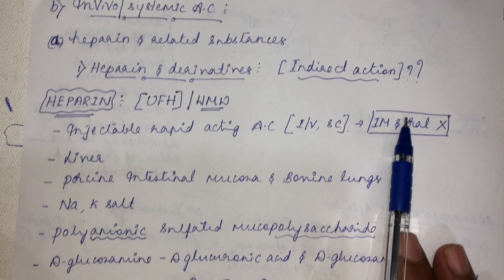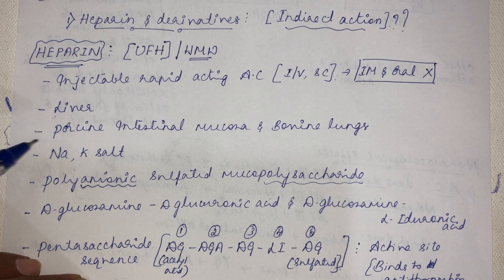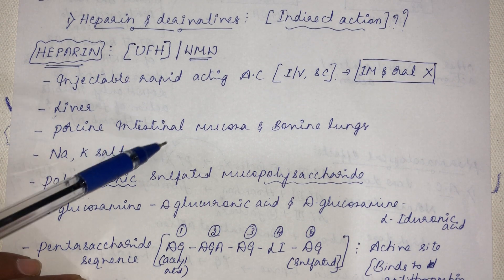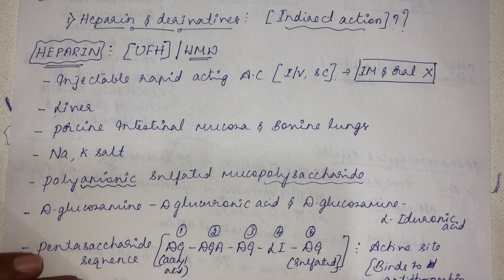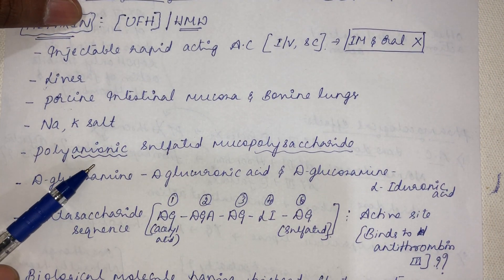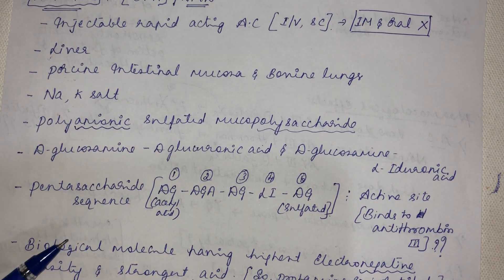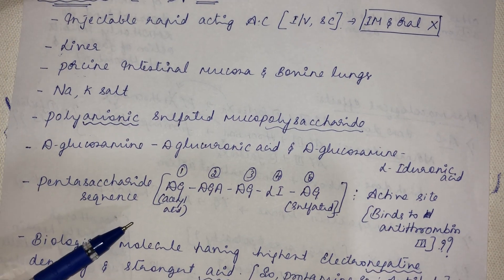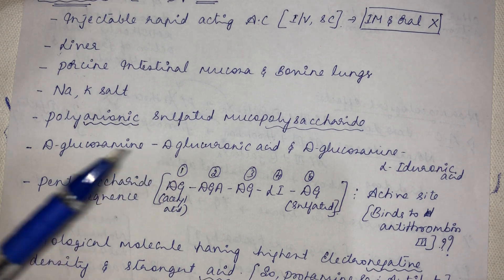The name 'heparin' comes from the liver, where it was first discovered in high amounts. Commercially, heparin is extracted from porcine intestinal mucosa and bovine lungs. It is commonly used as a sodium or potassium salt. Structurally, heparin is a polyanionic sulfated mucopolysaccharide, made up of repetitive units of D-glucosamine, D-glucuronic acid, and L-iduronic acid.